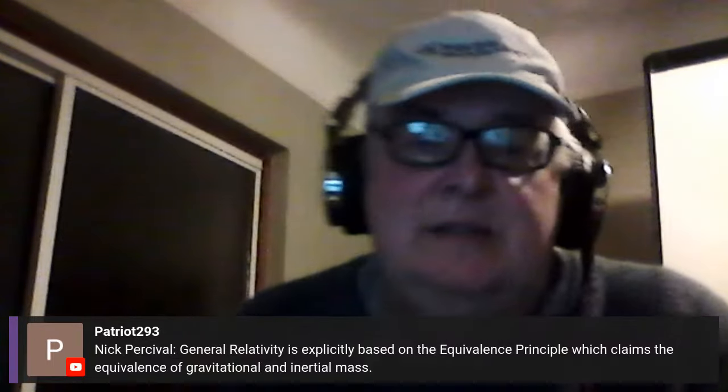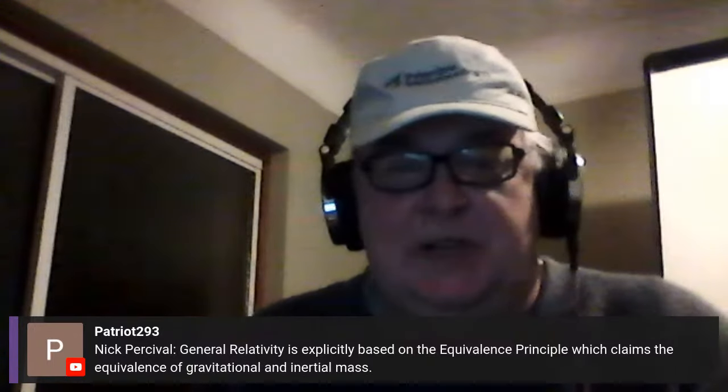Cornelius says the key observation is that gravitational energy does not equal inertial energy. Nick Percival says general relativity is explicitly based on the equivalence principle, which claims the equivalence of gravitational and inertial mass. The equivalence principle is actually a lot more than just that — you've got the weak equivalence principle, the strong equivalence principle, what Galileo meant by it, and what Einstein meant by it. So it's just more of a confusing mess as to what Einstein did.